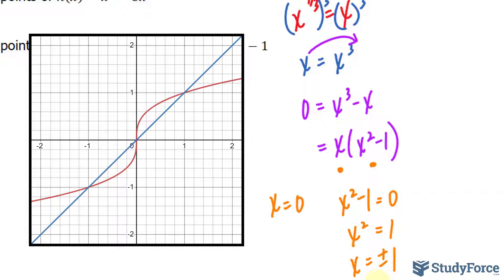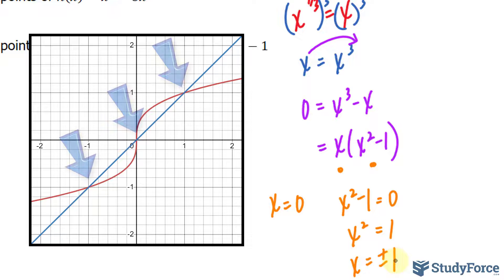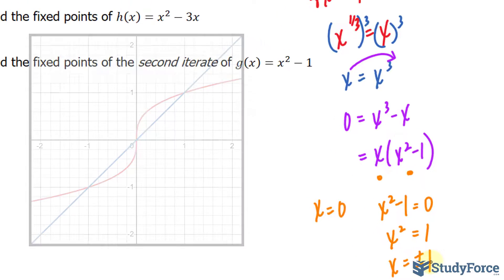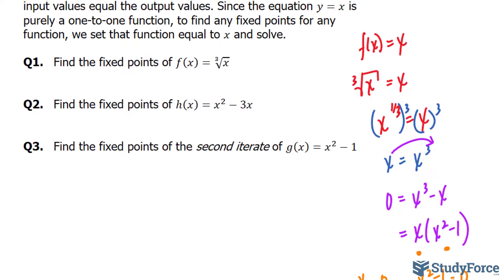There are three times when the input values — x equals 0, positive 1, and negative 1 — will produce the same output. Let's move on to question number two.